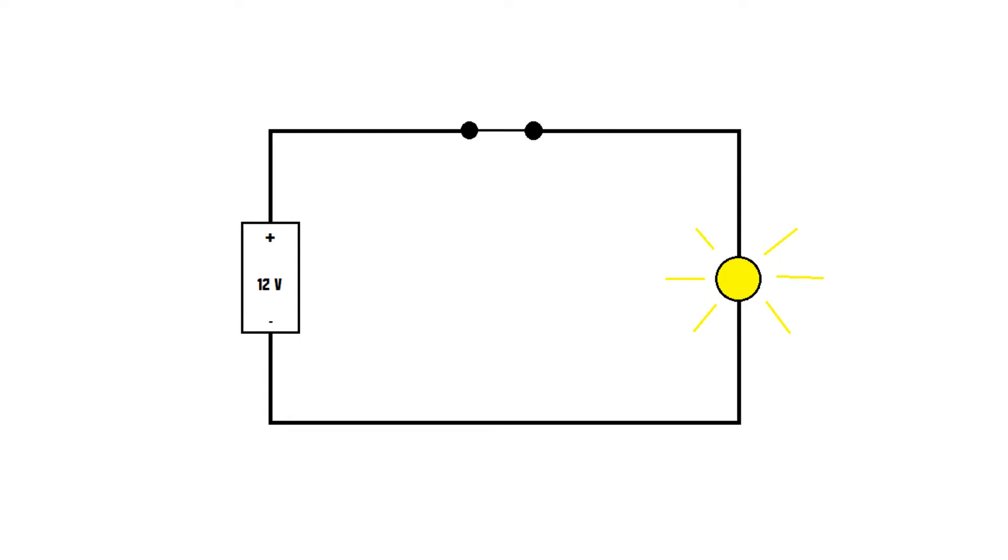When you flip the switch, 12 volts is applied to the light bulb and therefore it lights up. When you flip the switch again, 0 volts is applied to the bulb and therefore it turns off.